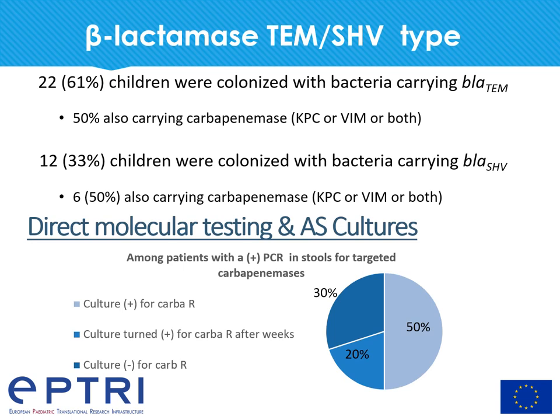We performed direct molecular testing and compared the results with antimicrobial surveillance cultures. Among patients with a positive PCR in stools for targeted carbapenemases, only half also had a positive culture for carbapenem resistance. 20% of these children had cultures that turned positive for carbapenem resistance after weeks, whereas 30% had a positive PCR but a negative culture for carbapenem resistance.